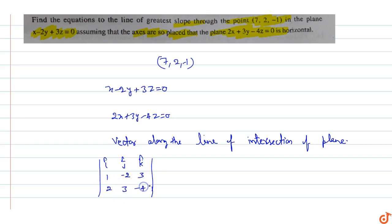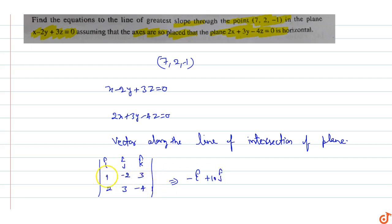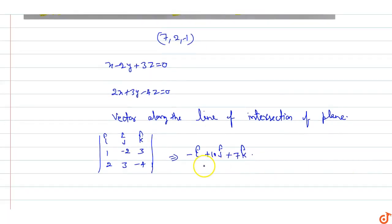Computing the cross product: i-cap component is (8 - 9) = -1, j-cap component is -(−4 - 6) = +10, and k-cap component is (3 + 4) = 7. So the direction ratios of the line are (-1, 10, 7).